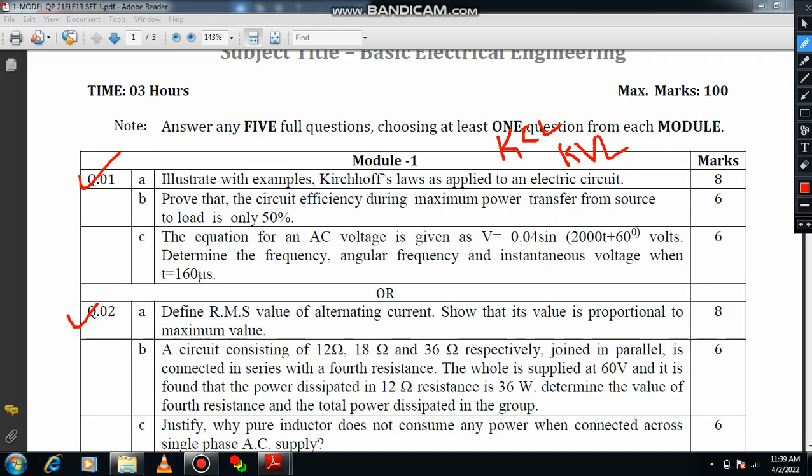Prove that the circuit efficiency during maximum power transfer from source to load is only 50%. You need to state maximum power transfer theorem first, then calculate the maximum power PM and PS. Then take the ratio between PM and PS, and prove that PM by PS times 100 is equal to 50%.